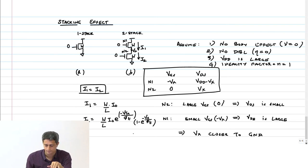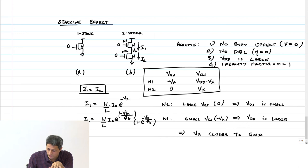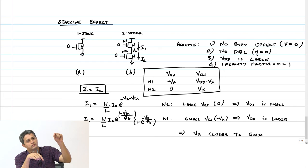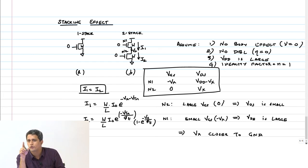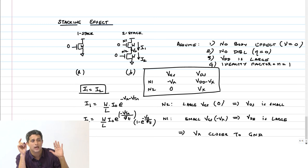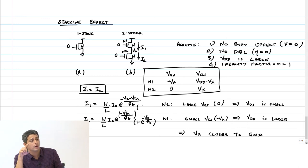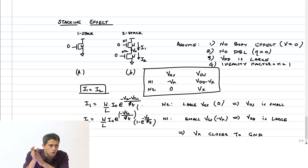What is I1? It is (W/L) × I₀ × e^((−V_X − V_TN) / φ_T) × (1 − e^(−(VDD − V_X) / φ_T)). Assuming body effect coefficient gamma is 0, both V_T values will be the same. Since V_X is close to ground and VDD is large (greater than 3φ_T ≈ 78mV), the term (1 − e^(−VDD/φ_T)) ≈ 1.